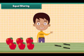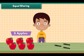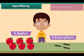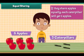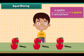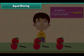Equal sharing. Here are six apples and three caterpillars. If they share apples equally, each caterpillar will get two apples. Six apples divided into three caterpillars are equal to two apples each.